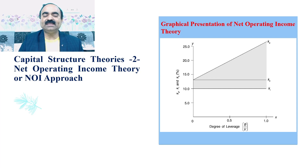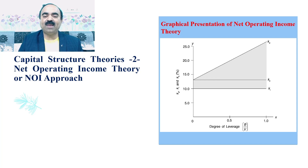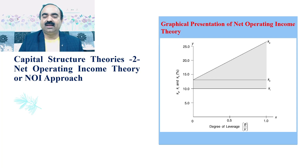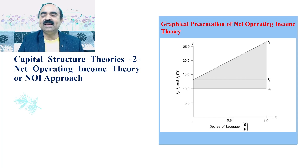Dear students, in this slide I have given a graphical presentation of Net Operating Income theory. In this diagram, I have taken degree of leverage on the x-axis. Cost of equity capital, shortly known as KE, cost of debt, shortly known as KI, and overall cost of capital, shortly known as KO, in terms of percentage are shown on the y-axis. We can observe that KO is parallel to the x-axis and KI is also parallel to the x-axis. As the degree of leverage increases, the cost of equity capital is increasing in the diagram.